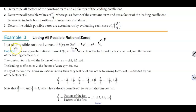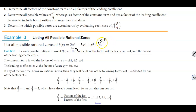We're going to list all possible rational zeros of f(x) = 2x⁴ - 5x³ + x² - 4. The only possible rational zeros are the quotients of the factors of the last term, which is negative 4, and the factors of the leading coefficient, 2. So the constant term p is equal to negative 4, and the leading coefficient q is equal to 2.